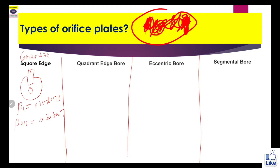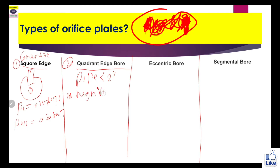The second type is quadrant edge bore. This is used when pipe size is less than 2 inches. It is recommended whenever a high viscosity fluid is used — the quadrant edge bore type orifice plate will be very helpful in such applications.